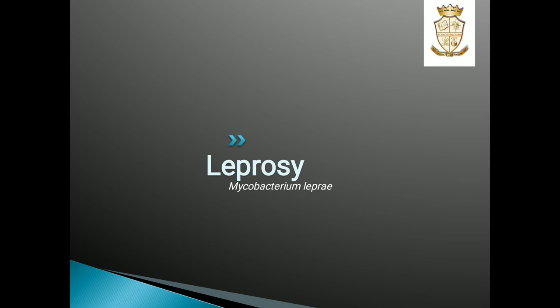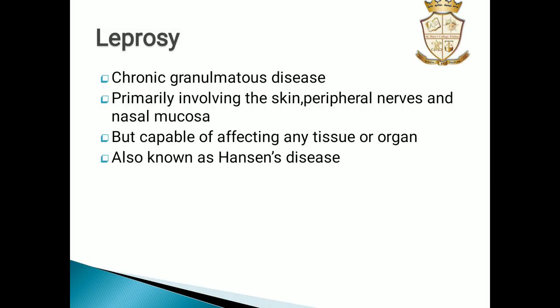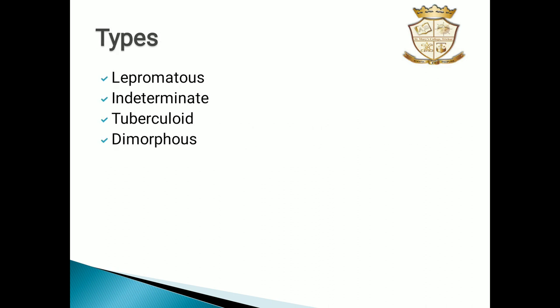The first one is leprosy. The causative organism of leprosy is Mycobacterium leprae. Leprosy is a chronic granulomatous disease involving the skin, peripheral nerves, and nasal mucosa. These are the most susceptible areas in the body, though any region or tissue can be affected. It is also known as Hansen's disease.